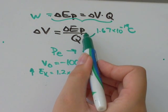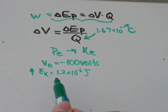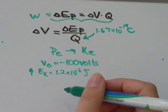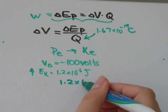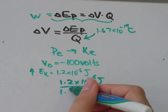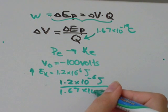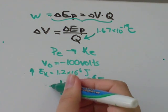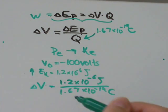We know the change in the electric potential is 1.2 times 10 to the negative 6 joules. And that divided by the charge on the electron is going to be equal to the change in voltage.